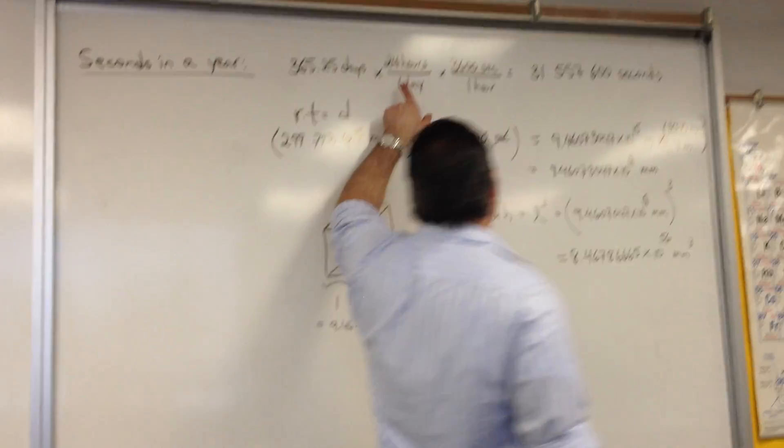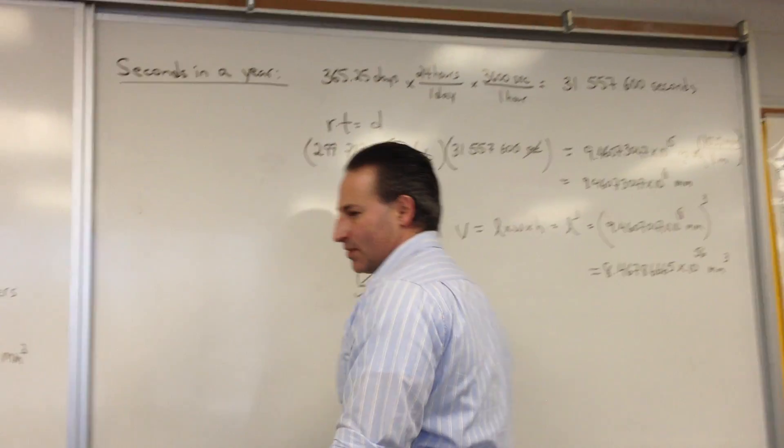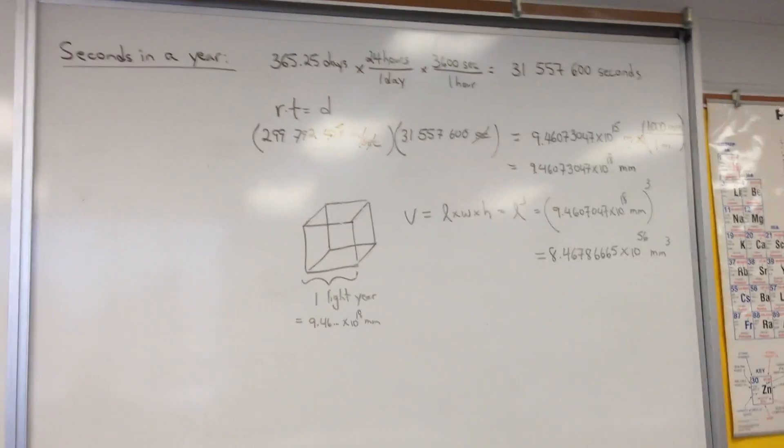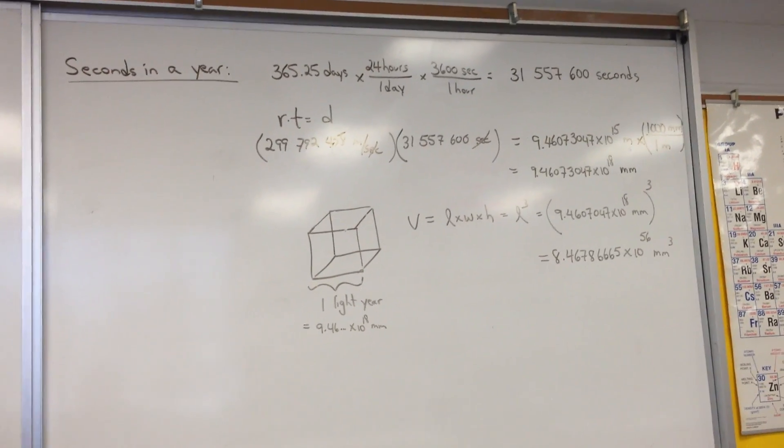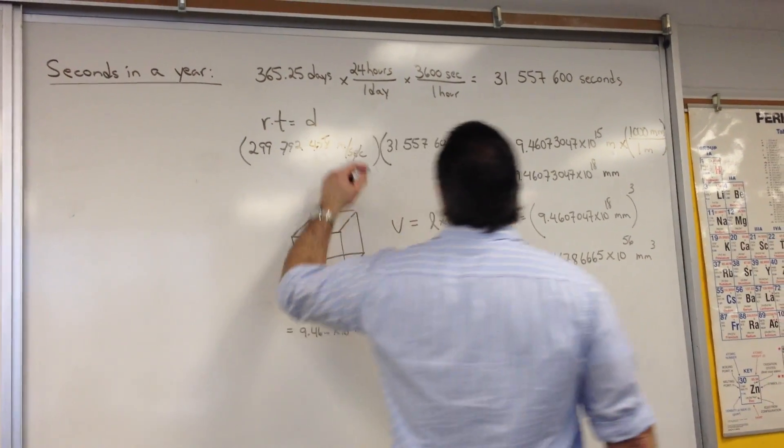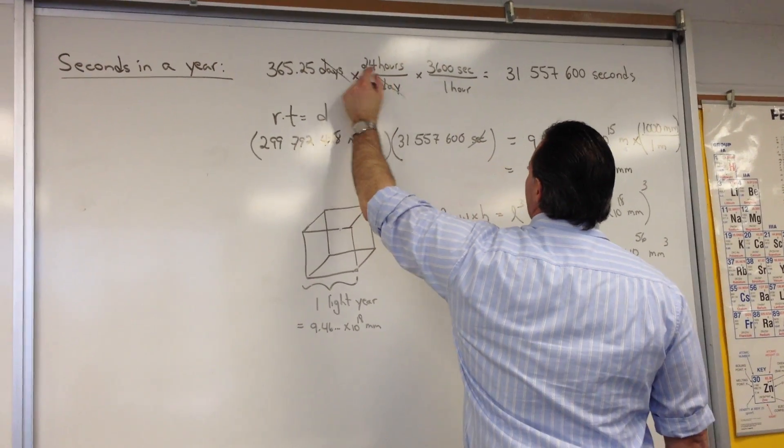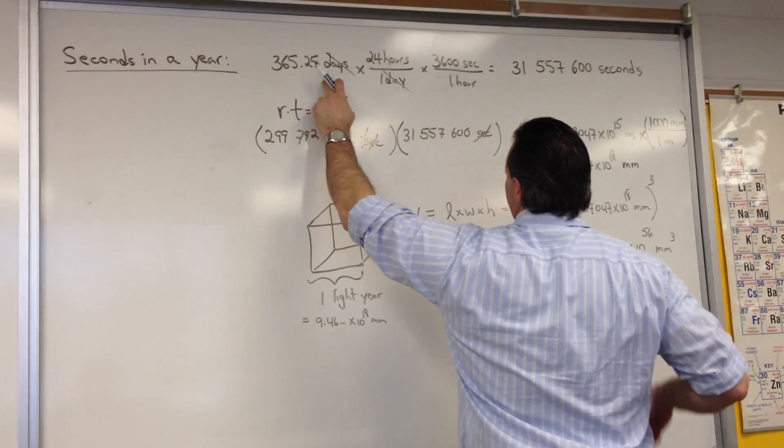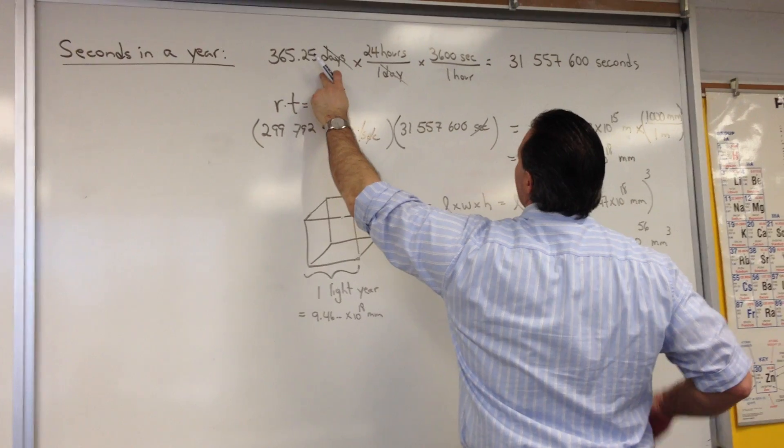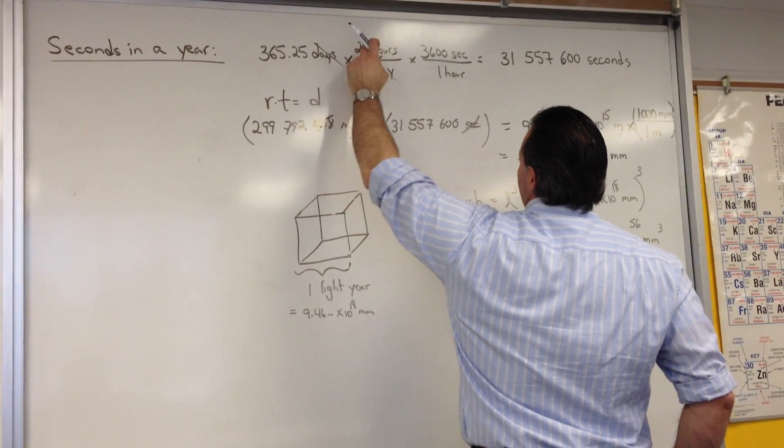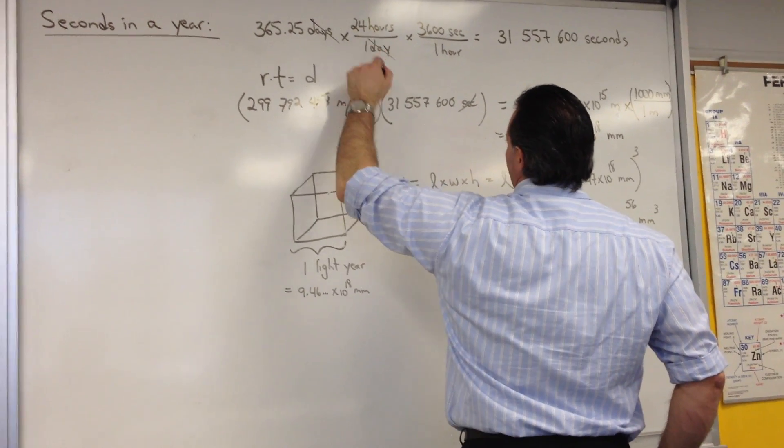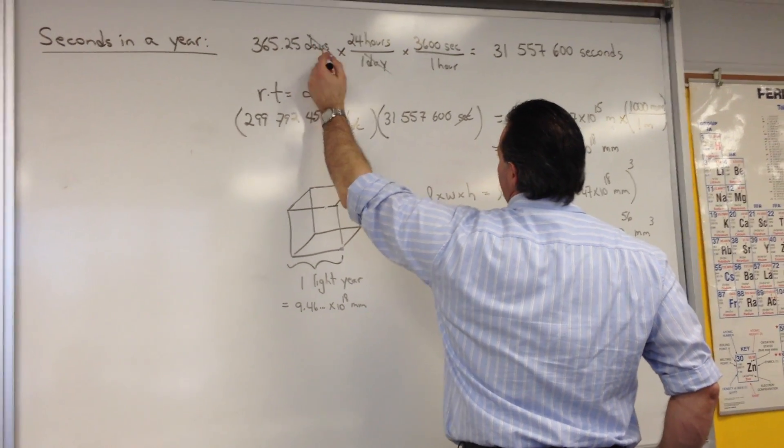Here we have an example of the calculation. Here are the number of seconds in a year. Notice the conversion factors are set up so that at each step, at each conversion, we can eliminate the previous unit. So 365 and a quarter days in a year. Convert that to hours by multiplying by 24, which is 24 hours per day. I put days in the bottom because I want to cancel days.